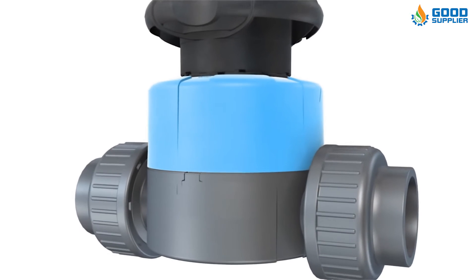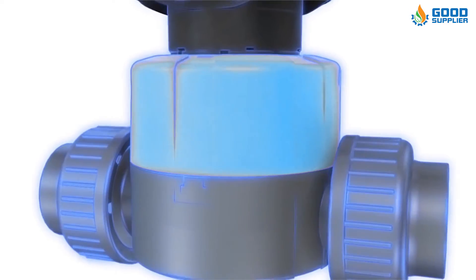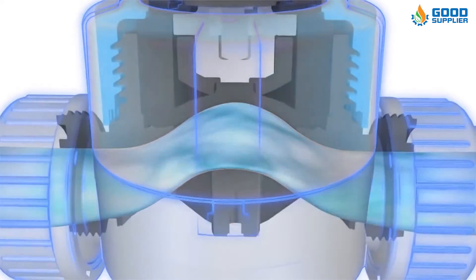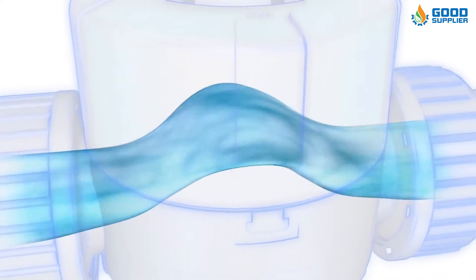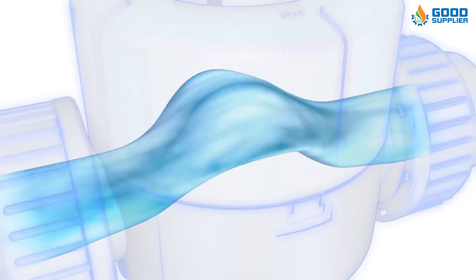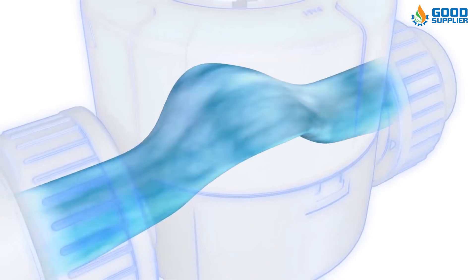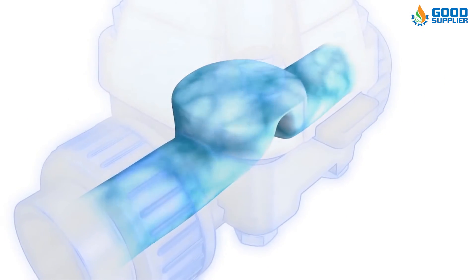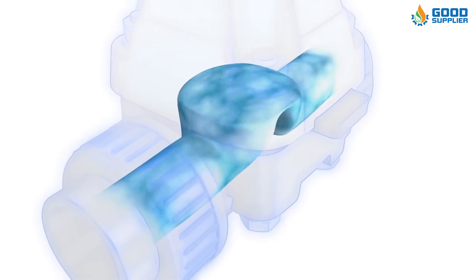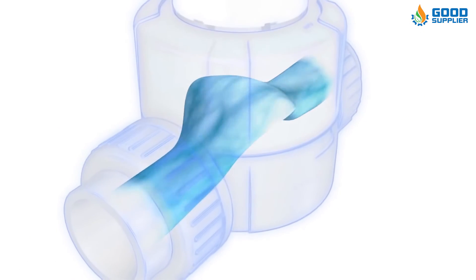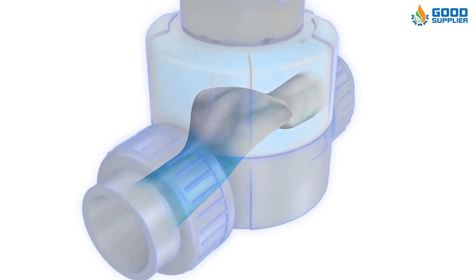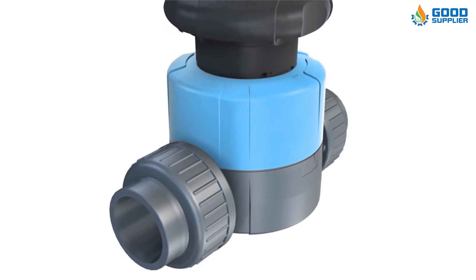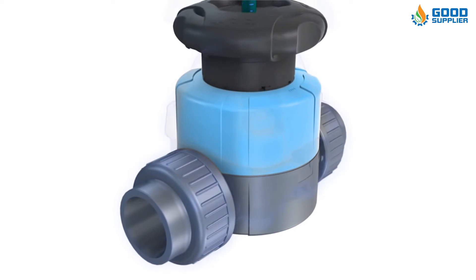In the weir type diaphragm with the rising stem, the hand wheels carry a shroud that covers the stem threads while sliding over a lift indicator sleeve. The shroud is to protect the external stem thread from dust and outside corrosive influences.